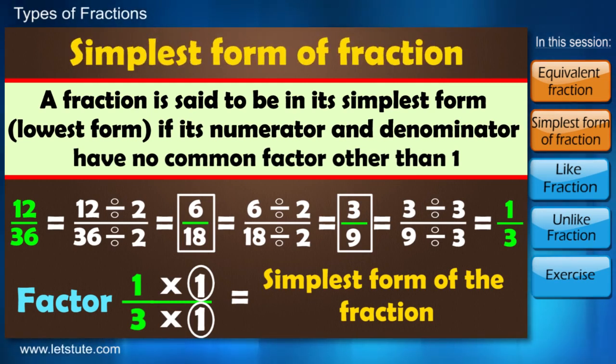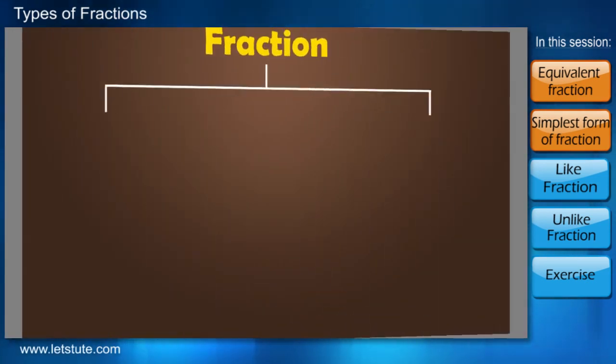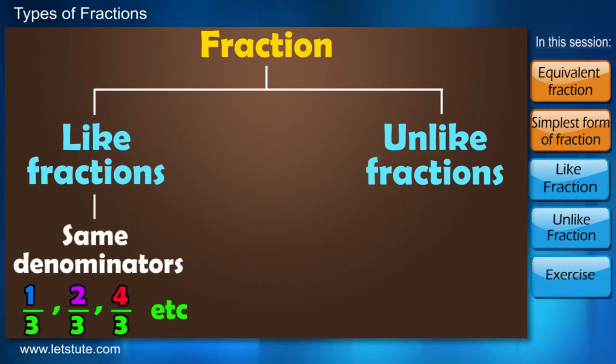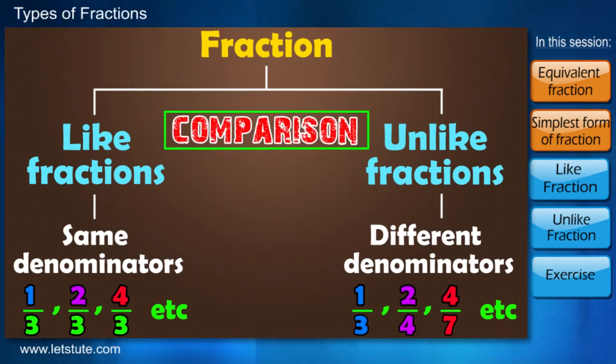While we were learning simplest fraction, we also learned various examples of equivalent fractions too, isn't it? Now here we move to the last two forms of fractions: like fractions and unlike fractions. Like fractions are fractions with same denominators, and fractions with different denominators are known as unlike fractions.